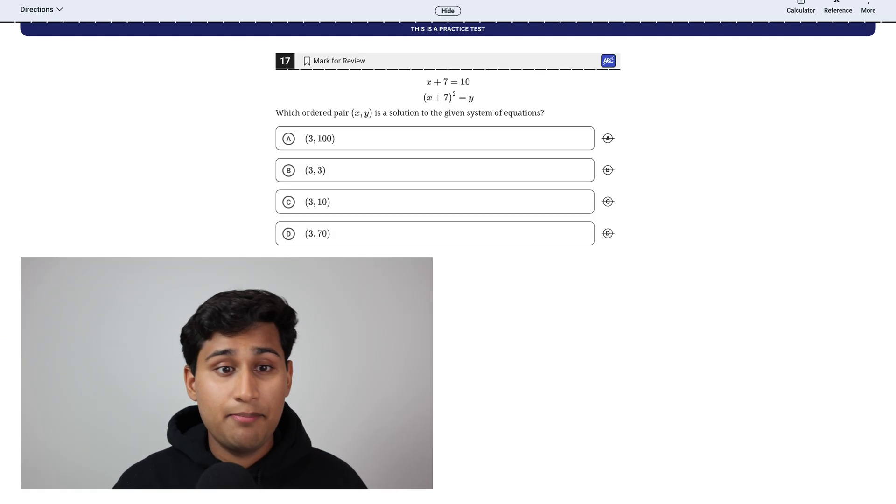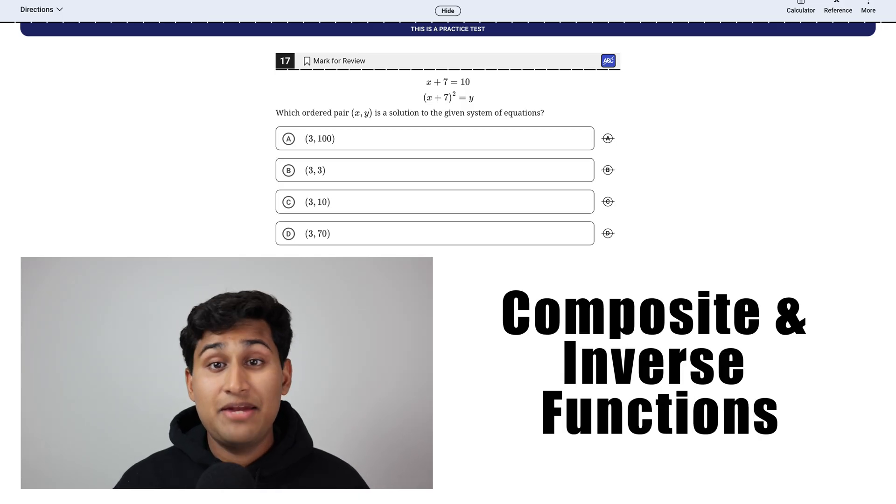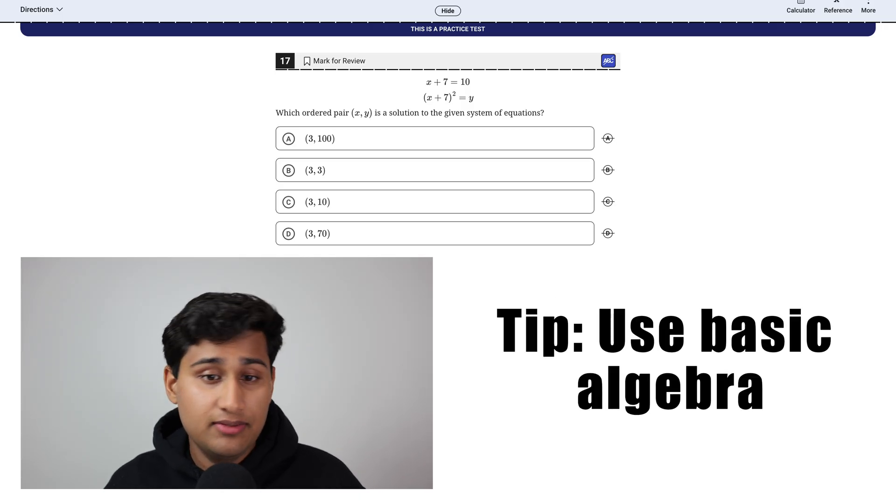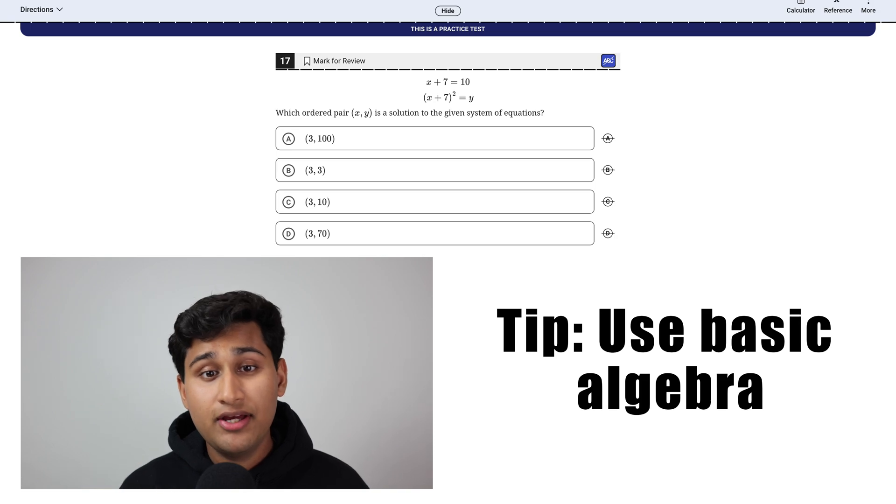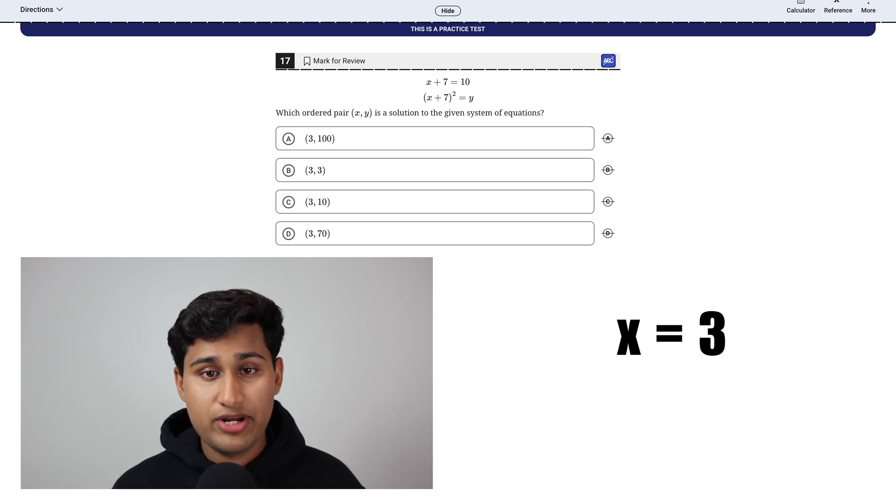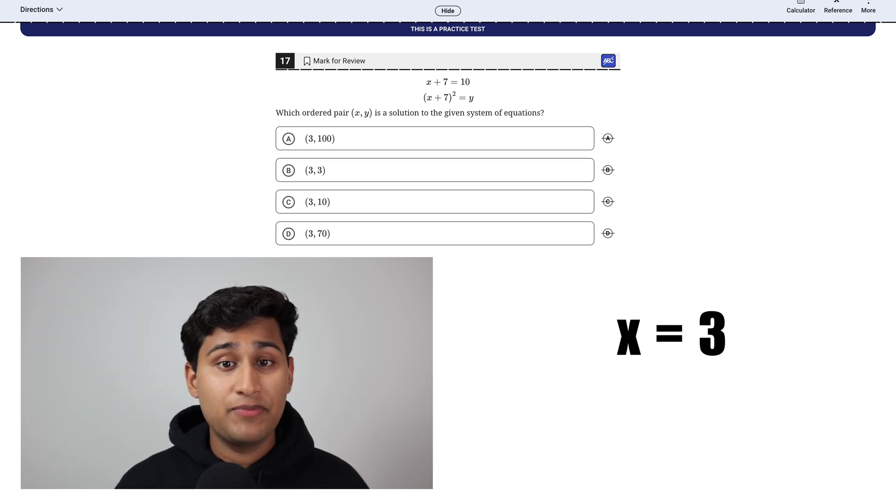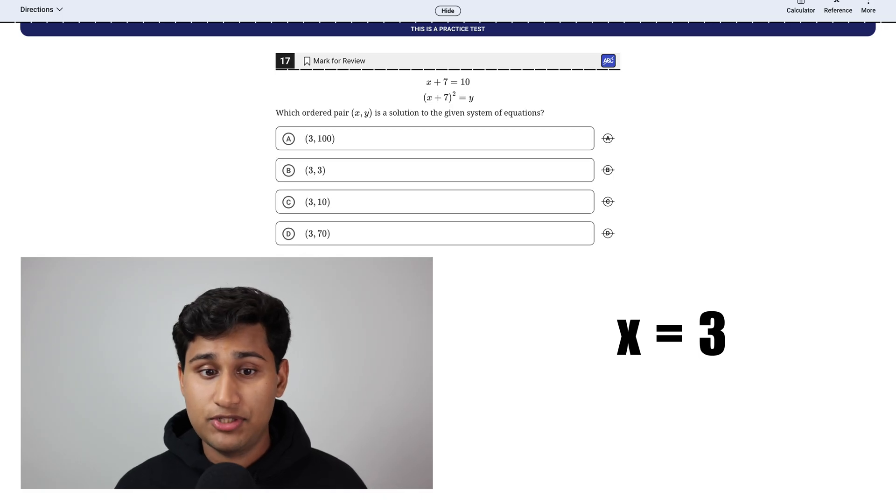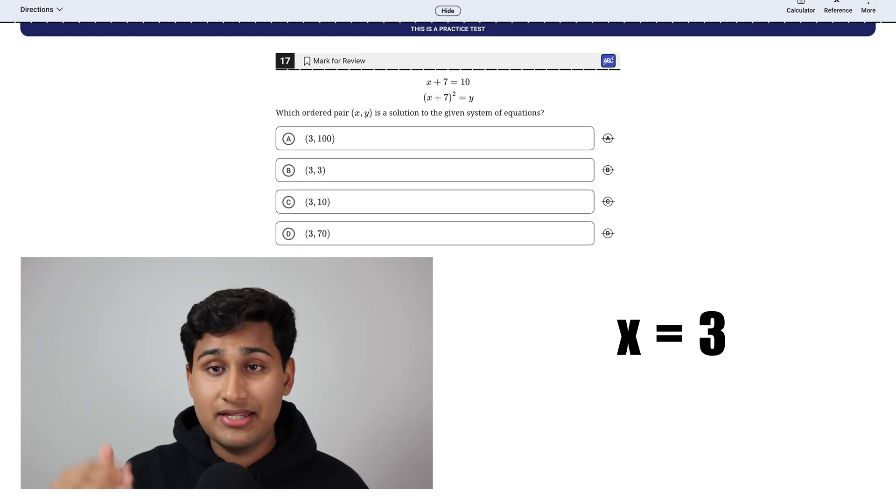The next type of problem is composite and inverse functions. And my tip for this one is to use basic algebra. Here, looking at the first top equation, we can just get that X equals three because you just subtract seven and you get 10 minus seven equals X, X equals three.